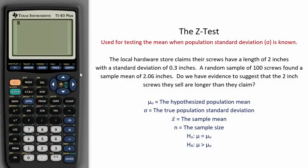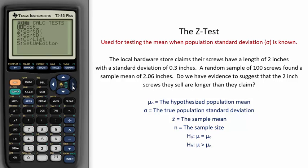The Z-Test is used to test the mean when population standard deviation sigma is known. To get to it on the TI calculator, go to STAT, over to Tests, and then click on Z-Test.